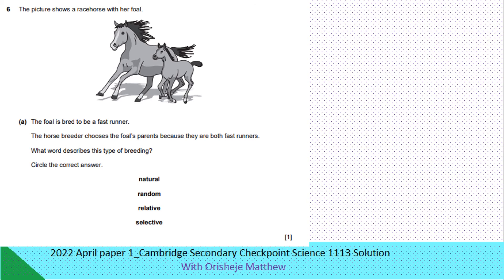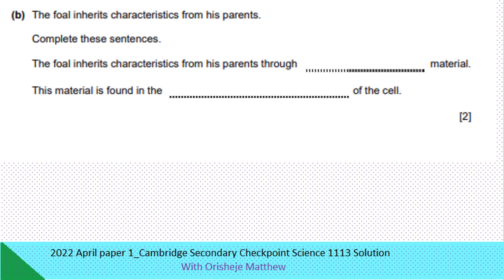The picture shows a racehorse with her foal. The foal is bred to be a fast runner. The horse breeder chooses the foal's parents because they are both fast runners. What describes this type of breeding? Selective breeding. The foal inherits characteristics from its parents through genetic material. The genetic material is found in the nucleus of the cell.